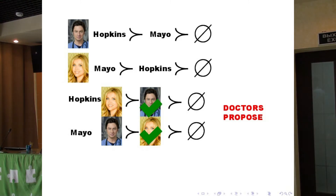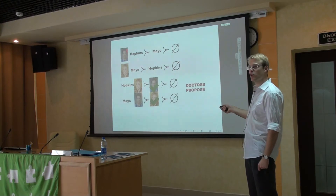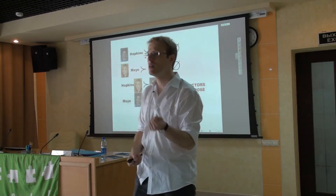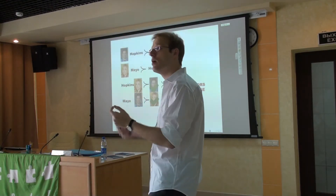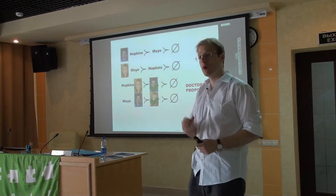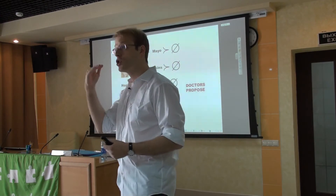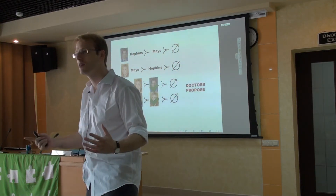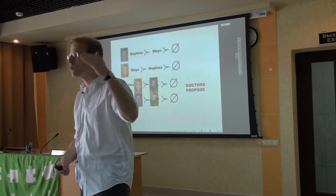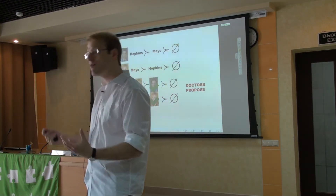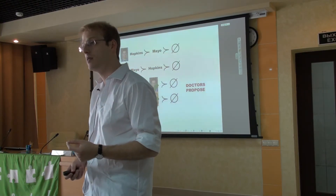The side that ends up having the proposal - if you like, that extra little bit of bargaining power - ends up being best off among all of those stable outcomes. From about the 1950s to the mid-1980s, the algorithm was run with hospitals proposing. It still worked well, but in every year, among all the possible outcomes, the hospitals were getting the best deal. In the 1980s, the algorithm was changed. Alvin Roth went out and convinced them to change the algorithm to allow the doctors to propose.